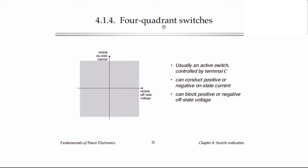The most general kind of switch is the four-quadrant switch, which is capable of blocking either polarity of voltage and conducting either polarity of current, so it can work in all four quadrants. This essentially has to be an active switch controlled by a control terminal. In general it is active, and it can be complicated to control — turning on and off at exactly the right time — since we don't have a diode that will turn on or off in coordination with some other switch in the circuit.